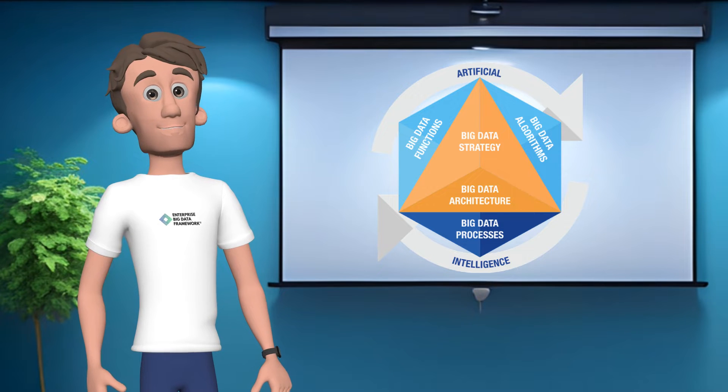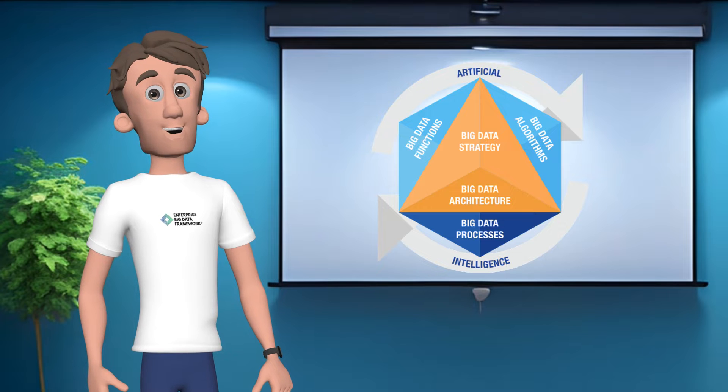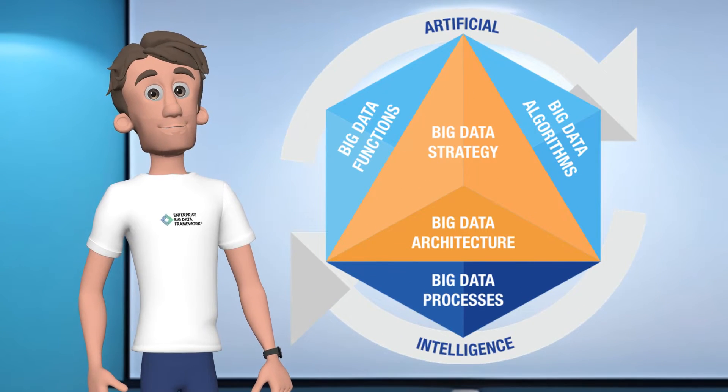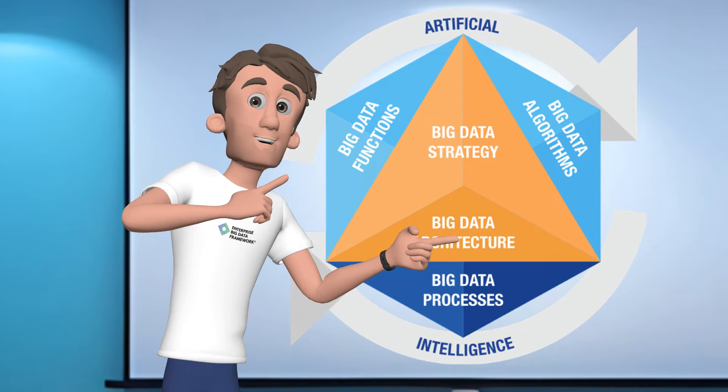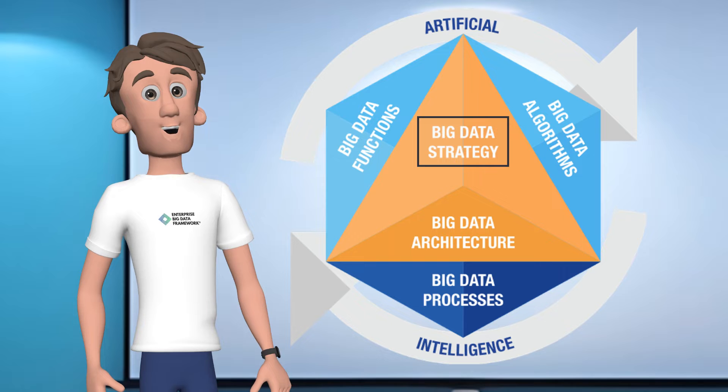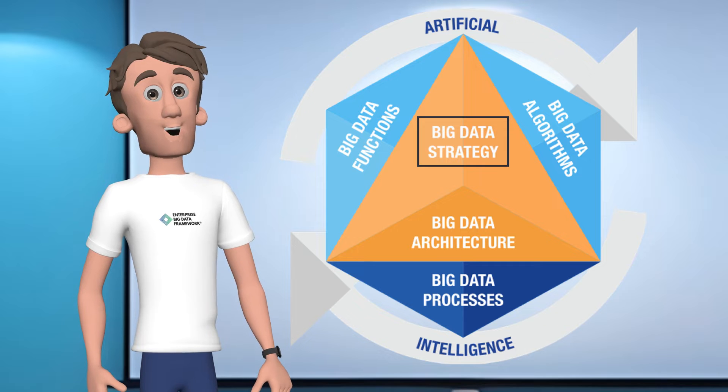At a very high level, the Enterprise Big Data Framework consists of six major capabilities that every organization needs to utilize their data effectively. It all starts with a data strategy. Without a strategy, it is not clear where the organization should go. A good big data strategy covers the value an organization wants to achieve with data and the expected return on investment.